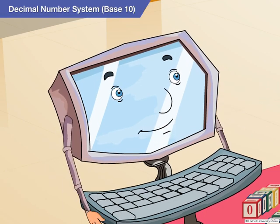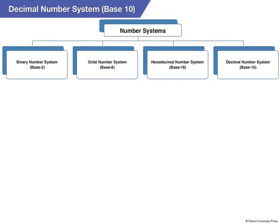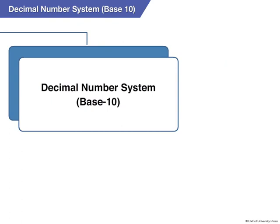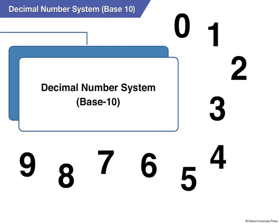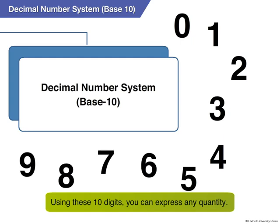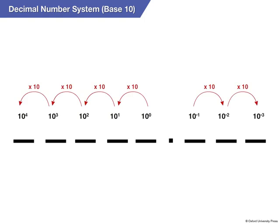The decimal number system. This number system is made up of 10 digits: 0, 1, 2, 3, 4, 5, 6, 7, 8, and 9. Using these 10 digits, you can express any quantity. Because it uses 10 digits, the decimal number system is also called the base 10 system, where the base number 10 is called the radix.